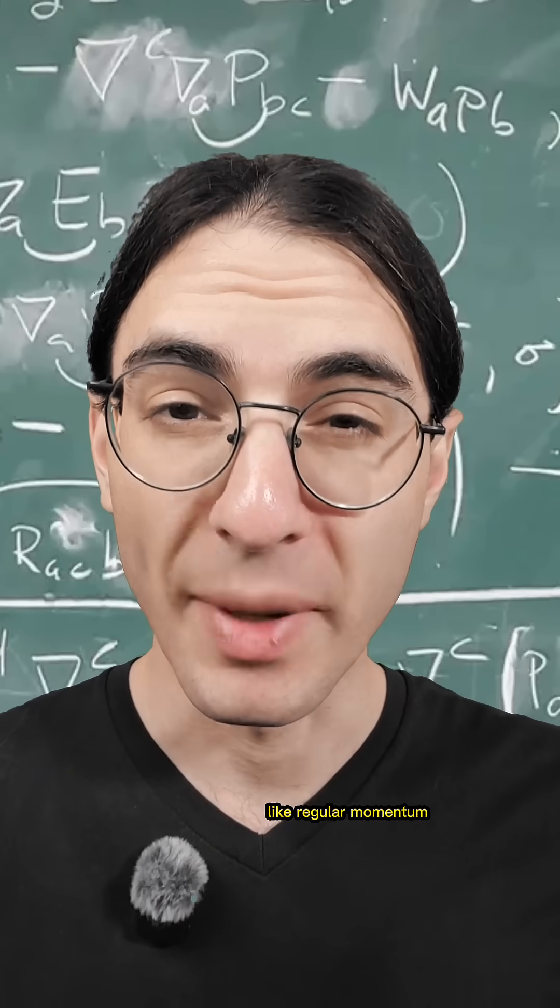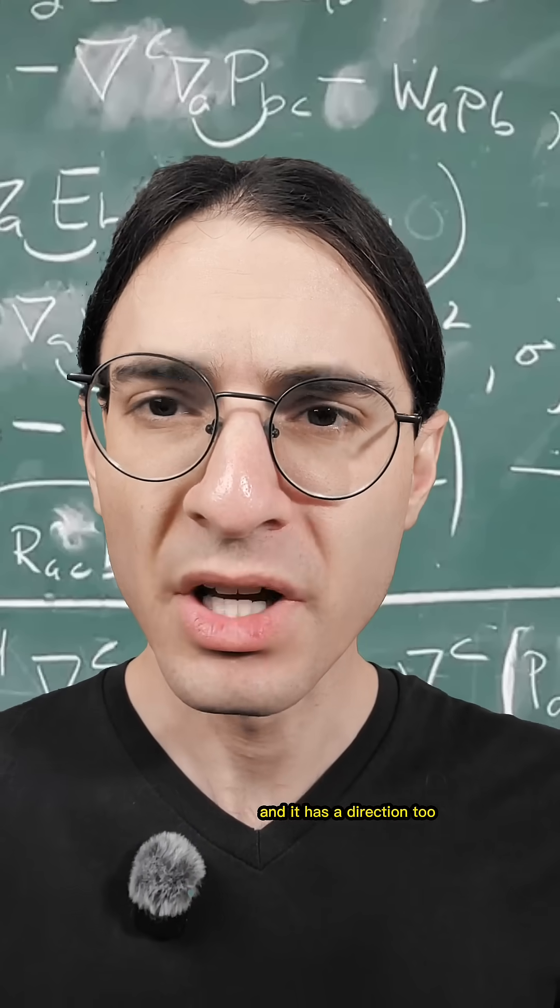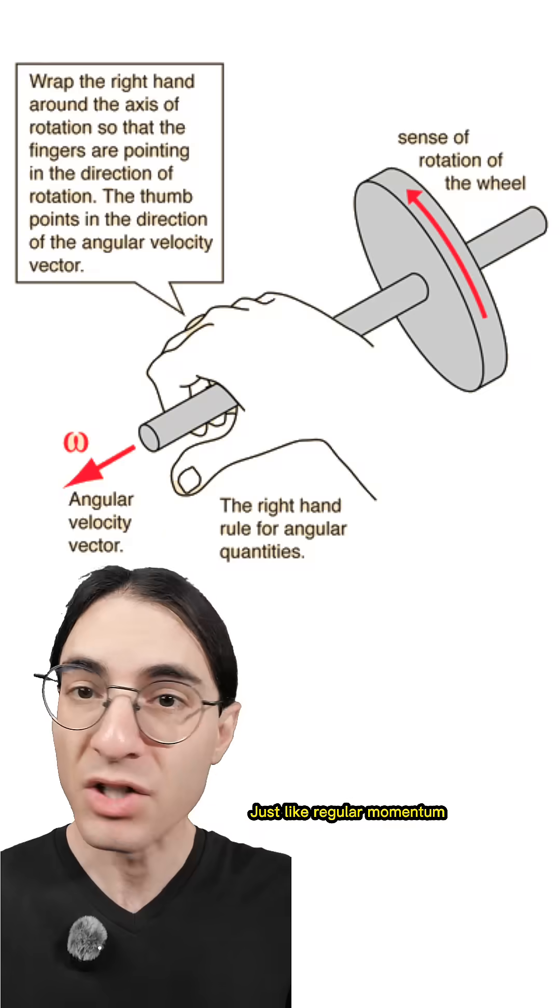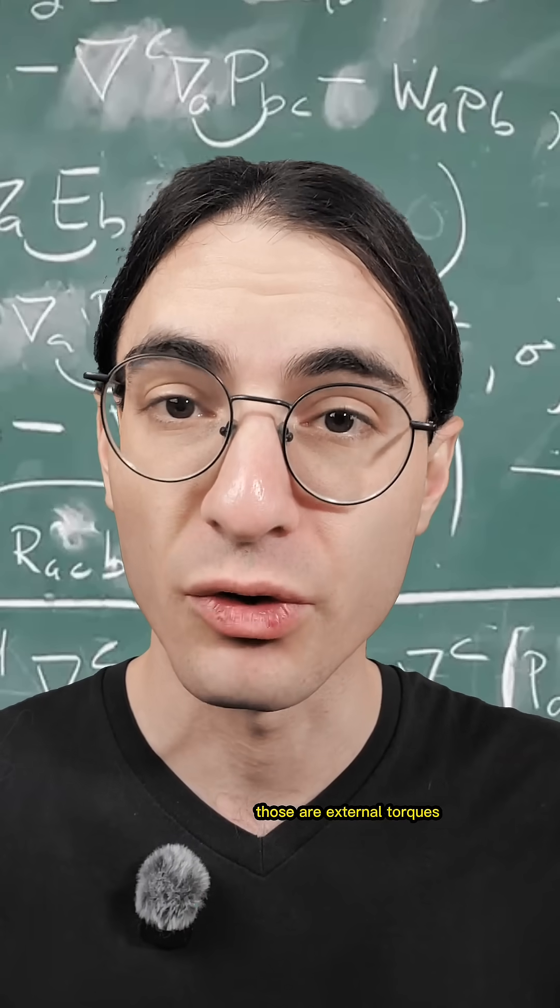Angular momentum, like regular momentum, can be thought of as an inertia times a velocity, and it has direction too. Curl your right hand fingers in the direction of rotation, and your thumb points in the direction of the angular momentum. Just like regular momentum, it only changes when something outside pushes on it. Those are external torques.